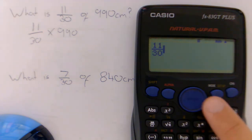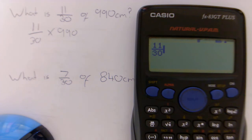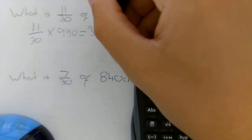Now if we press our right key this takes us out of the fraction and we can type in the rest of our question here. So times 990. Press equals and we get 363. So the answer to this one is 363 centimetres.